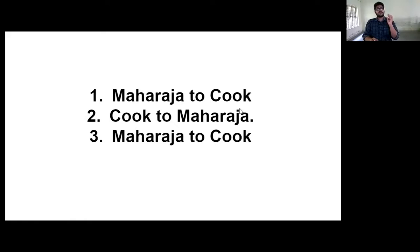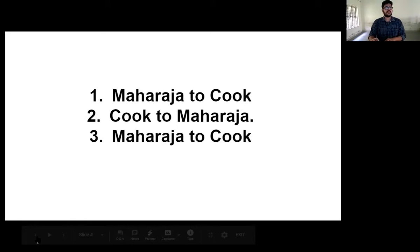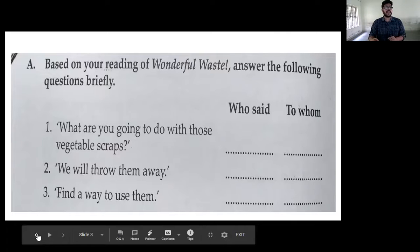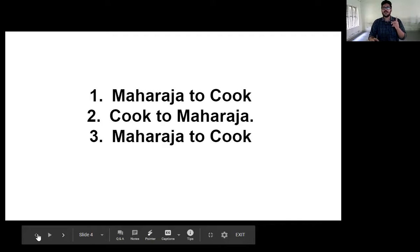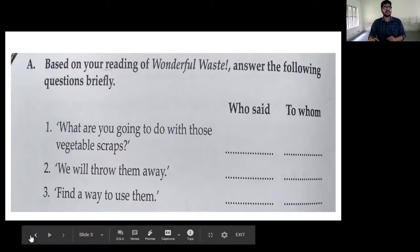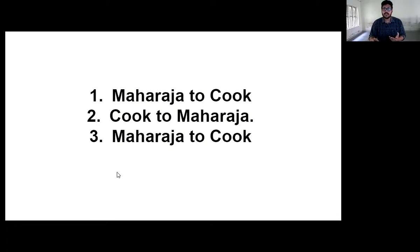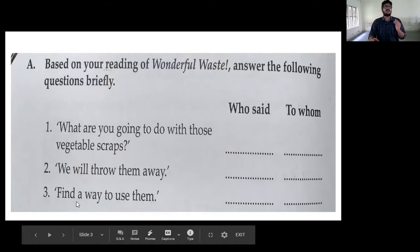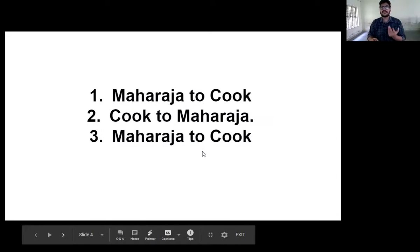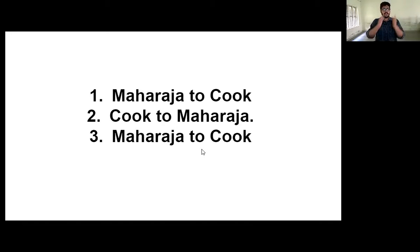Let's discuss the answers. First dialogue — 'What are you going to do with those vegetable scraps?' — the Maharaja said to the Cook. Second dialogue — 'We will throw them away' — the Cook said to the Maharaja. Third dialogue — 'Find a way to use them' — the Maharaja said to the Cook. So the answers are: Maharaja to Cook, Cook to Maharaja, Maharaja to Cook. Try to write it down in your workbook.